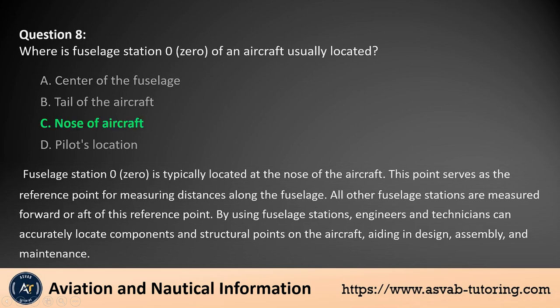The answer is C. Fuselage station 0,0 is typically located at the nose of the aircraft. This point serves as the reference point for measuring distances along the fuselage. All other fuselage stations are measured forward or aft of this reference point. By using fuselage stations, engineers and technicians can accurately locate components and structural points on the aircraft, aiding in design, assembly, and maintenance.